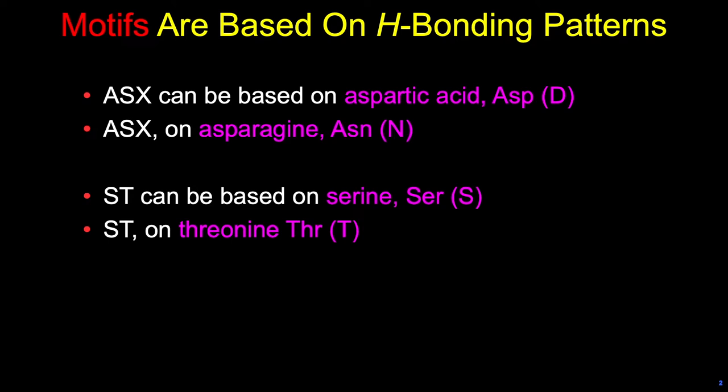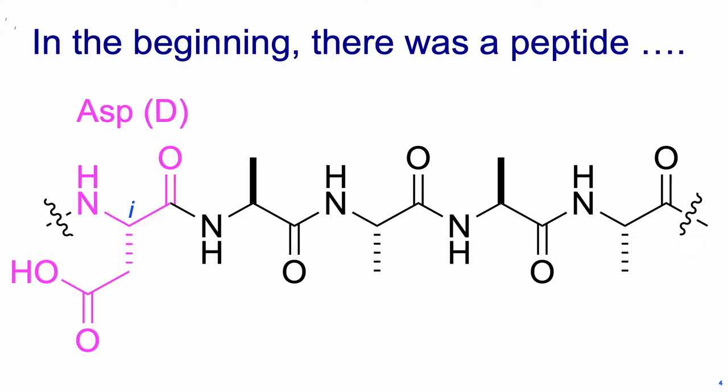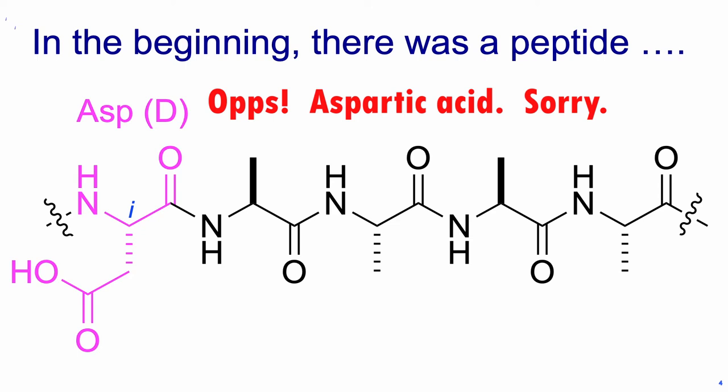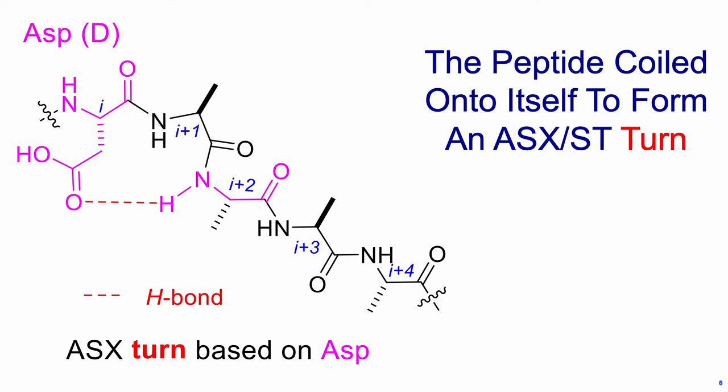ASX motifs contain the corresponding turn. The difference between turns and motifs is confusing, so let's talk about what ASX and ST turns are. Conventionally, if we take a peptide and start numbering from the key amino acid — here choosing asparagine as the ith residue — then towards the C terminus we label i, i+1, i+2, i+3, and i+4. If that peptide folds such that the carbonyl of the ASP side chain hydrogen bonds to the i+2 NH main chain, that forms a 10-membered motif — a very special number of atoms in peptide chemistry. That's an ASX turn in this case.